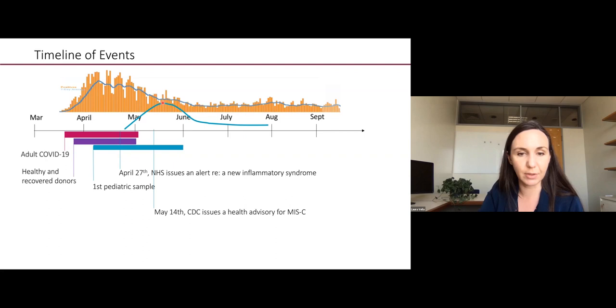Of course, during that time, while we were collecting these samples, the NHS issued on April 27th an alert about this new inflammatory syndrome. And shortly thereafter, we began in our hospital to see a peak. This is the community peak here, peaking in early April, and then we began to see a peaking in early May of cases that fit this inflammatory syndrome concept. In the middle of May, the CDC issued a health advisory for what is now called MIS-C, the multisystem inflammatory syndrome of children.